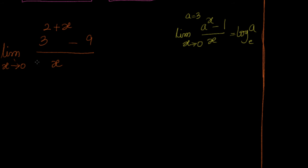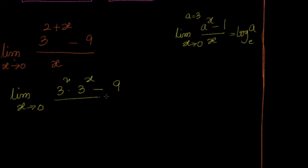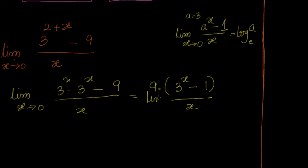I will divide the numerator by 9, or equivalently take 9 common. I write it as 3² times 3^x minus 9 divided by x, so that I can take 9 out and the second term becomes 1. It becomes 9 times (3^x minus 1)/x. The limit as x tends to 0 of a^x minus 1 over x is log a, and a equals 3. So the answer will be 9 times log 3 base e.